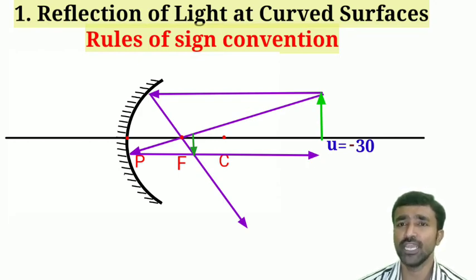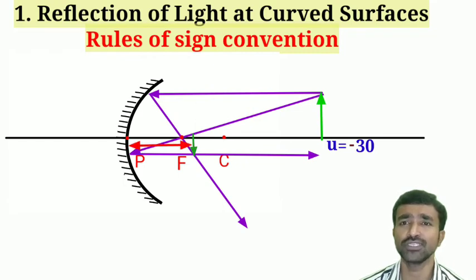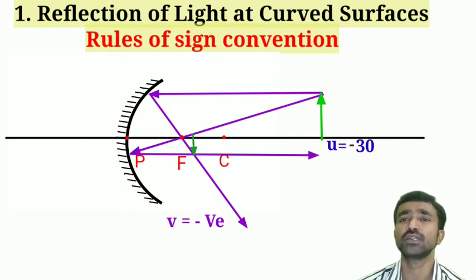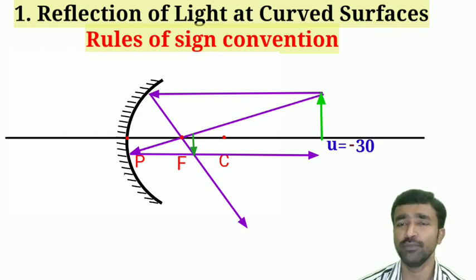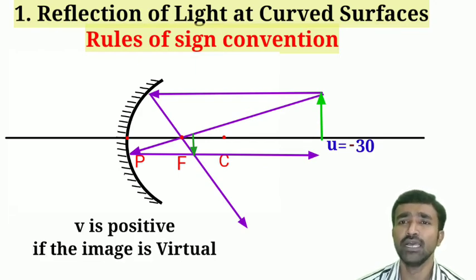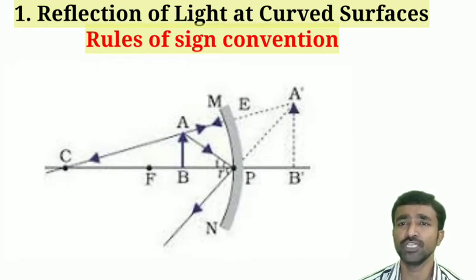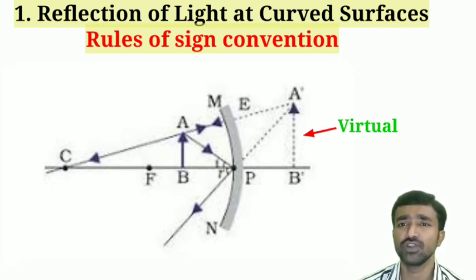For the example with object beyond center of curvature, the image is obtained between the focus and center of curvature — also opposite to the incident light direction — so image distance v is also negative. The image distance v becomes positive only when a virtual image is formed, meaning the image is obtained behind the mirror, such as when the object is placed between the pole and the focus of a concave mirror.